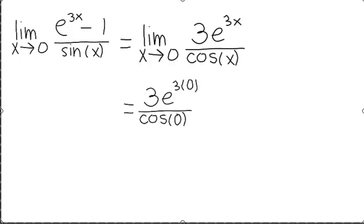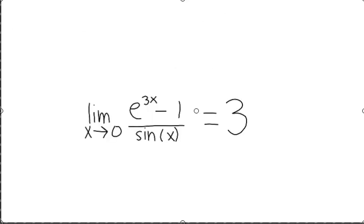Now, evaluating the resulting limit, we get 3 over 1 which equals 3. L'Hopital's rule tells us that this is also the value of the limit we had to begin with. Thus, the limit as x goes to 0 of e to the 3x minus 1 over sin of x equals 3.